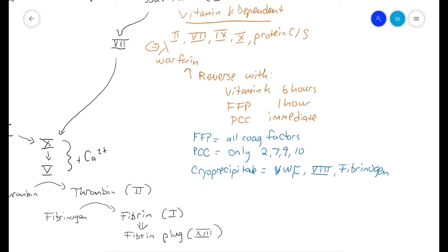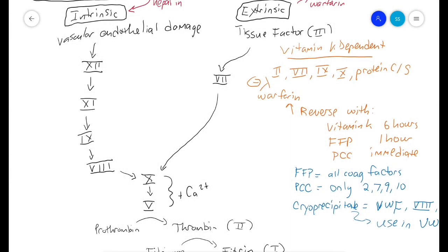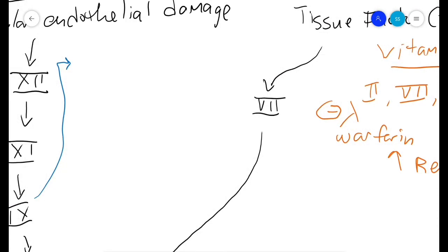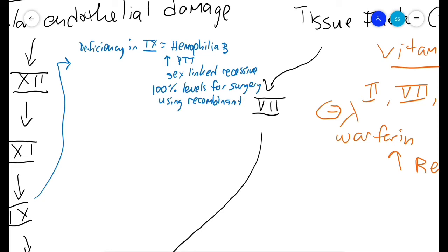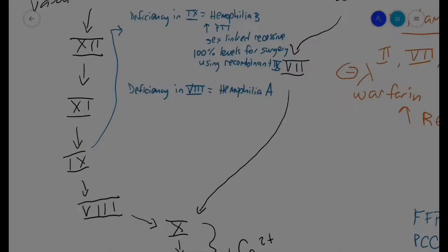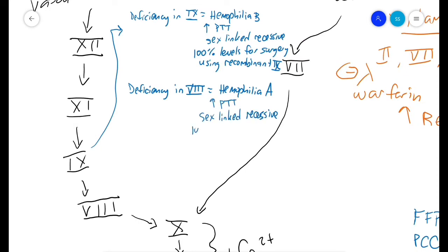Cryoprecipitate includes von Willebrand factor, factor 8, and fibrinogen, so it's used in von Willebrand disease and hemophilia A. Deficiency in factor 9 is hemophilia B. This shows increased PTT and is inherited sex-linked recessive. Prior to surgery, you need 100% factor 9 levels using recombinant factor 9. Deficiency in factor 8 is hemophilia A - also causes increased PTT, also inherited sex-linked recessive, and you want to give recombinant factor 8 prior to surgery. Remember that factor 8 is made from the endothelium, whereas all other coagulation factors are made in the liver.